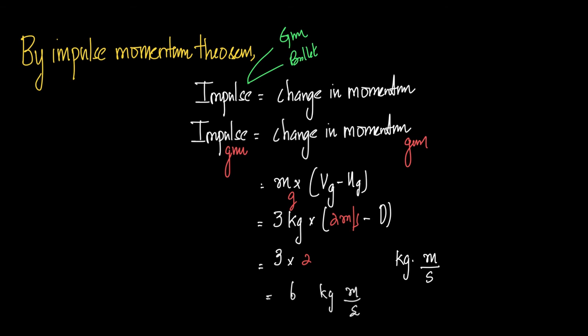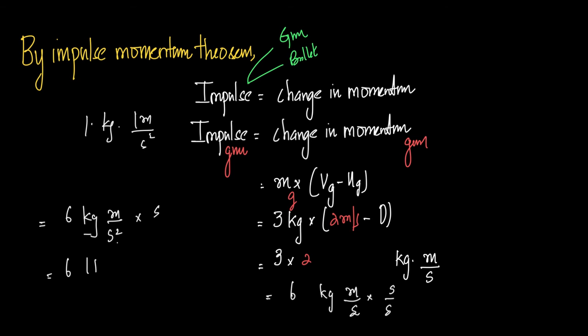For those who have the complete question, you may find a different unit. Multiplying and dividing by seconds: 6 kg·m/s² × s = 6 N·s, since 1 kg·m/s² is 1 Newton. Therefore the impulse applied to the gun is 6 Newton-seconds.